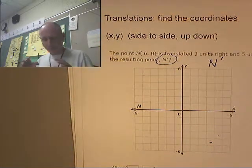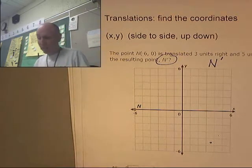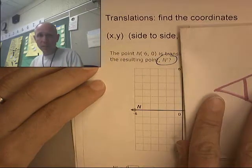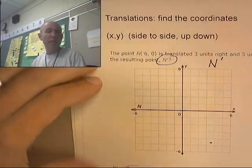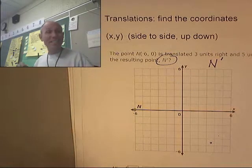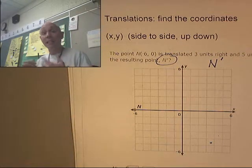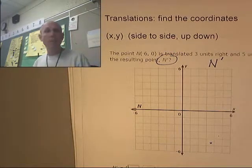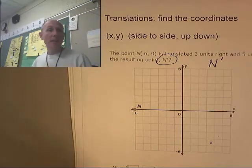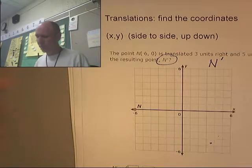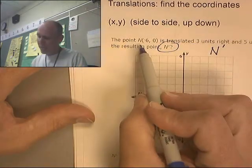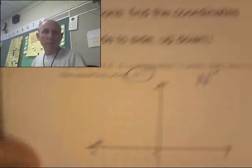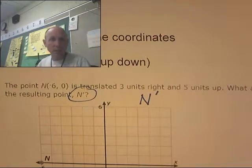Alright, here we go — translations: find the coordinates. In the last video I talked about how to translate something: you have an object and you move it up and over, point by point. This is the same thing, except instead of recreating it on the graph, we're just looking for the coordinates of the point after it's been translated.